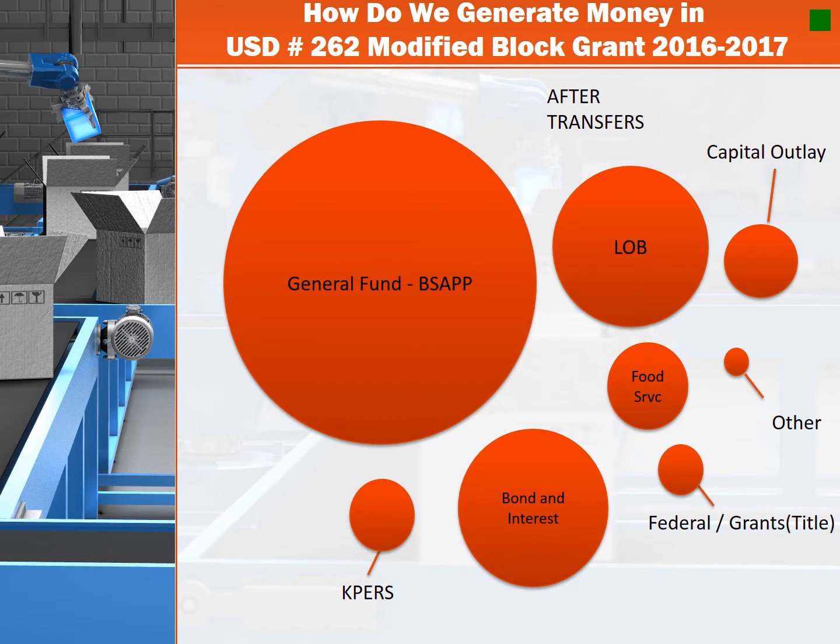This is the modified block grant of 2016-2017 after equalization was restored. And as you can see, the various pots are relatively similar to 2014-2015.